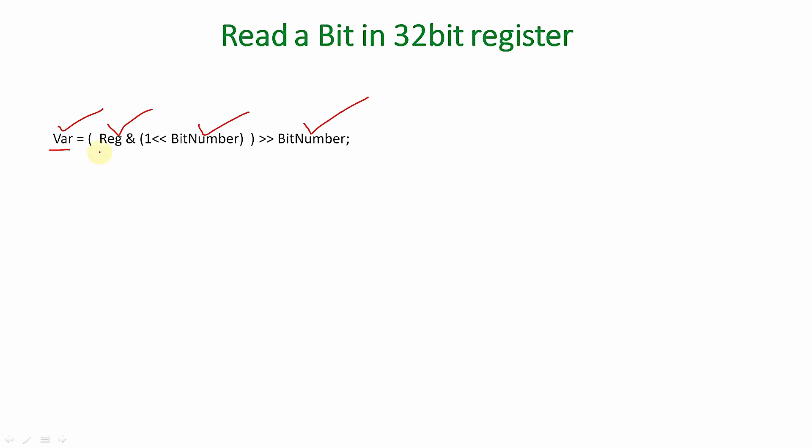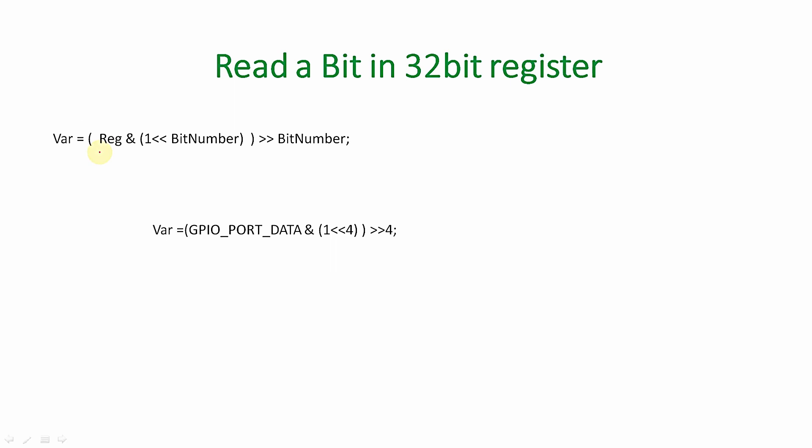The sequence goes like this: register AND of (1 left-shifted by bit_number), the whole result right-shifted by bit_number. This is the sequence required for reading a particular bit number's status without disturbing any other bits in the register. Most often this technique is useful for reading the input status of the input data register when interfacing input devices like keypads or push buttons to a microcontroller.